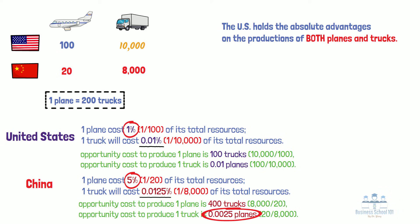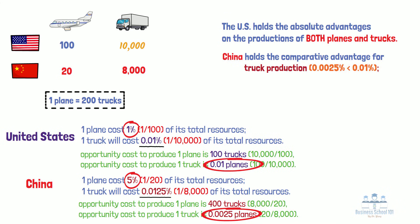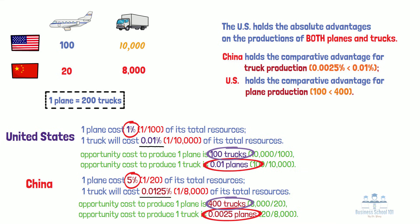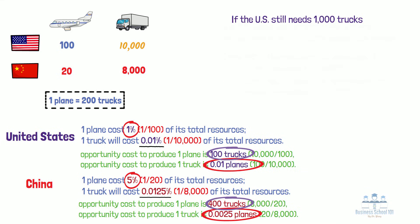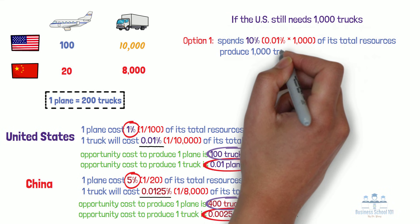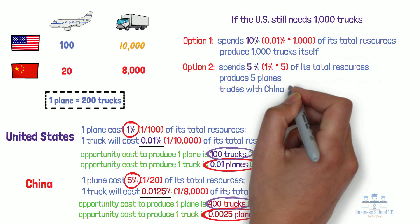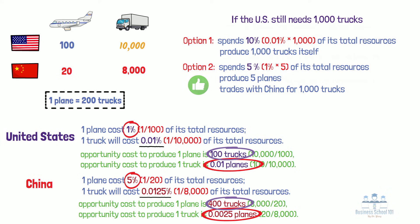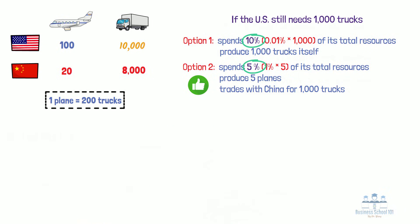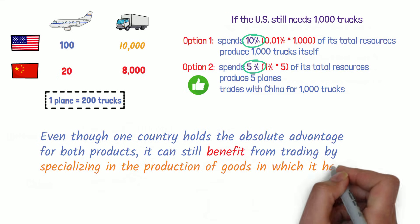Compared with the U.S., China has less opportunity cost to produce one truck, so we can say that China holds the comparative advantage for truck production. In contrast, the U.S. has less opportunity cost to produce one plane, so we can say that the U.S. holds the comparative advantage for plane production. Now, let's assume the U.S. needs 1,000 trucks and still has two options. Option 1: the U.S. spends 10% of its total resources to produce those trucks itself. Option 2: the U.S. spends 5% of its total resources to produce five planes, and then trades those planes with China for 1,000 trucks. Option 2 is still better for the U.S. because it can save half of the country's resources while still obtaining the same number of trucks. We can conclude that even though one country holds the absolute advantage for both products, it can still benefit from trading by specializing in goods in which it has a comparative advantage.